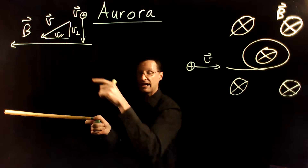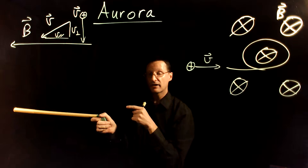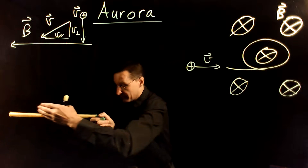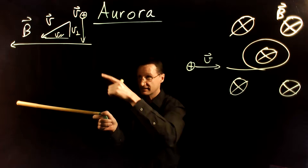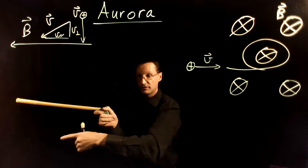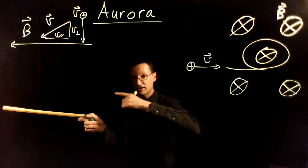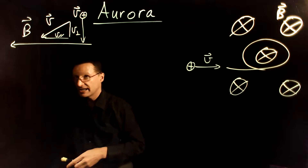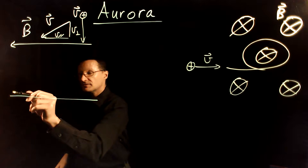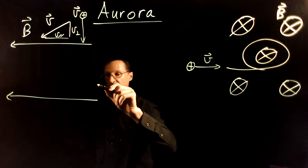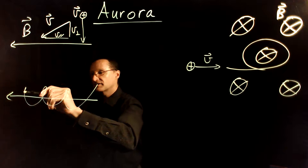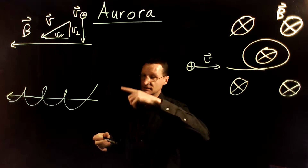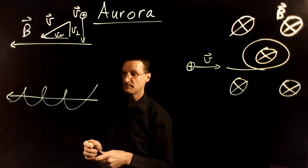The particle also has a velocity component parallel to the field, which causes it to drift along the direction of the magnetic field. So while it's turning in a circle, it's also drifting — and that creates a shape best described as a helix or a corkscrew. It's a circle combined with a drift motion.